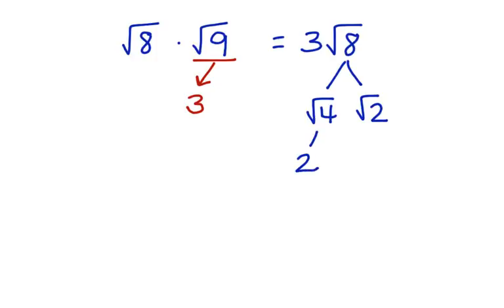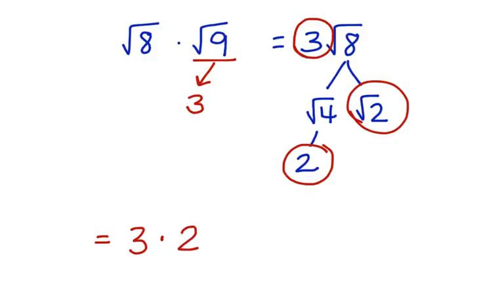Oh my goodness, there's a lot of pieces now. Let's circle all the pieces we have to put together. 3, 2, square root of 2. So we would have 3 times 2 times the square root of 2.